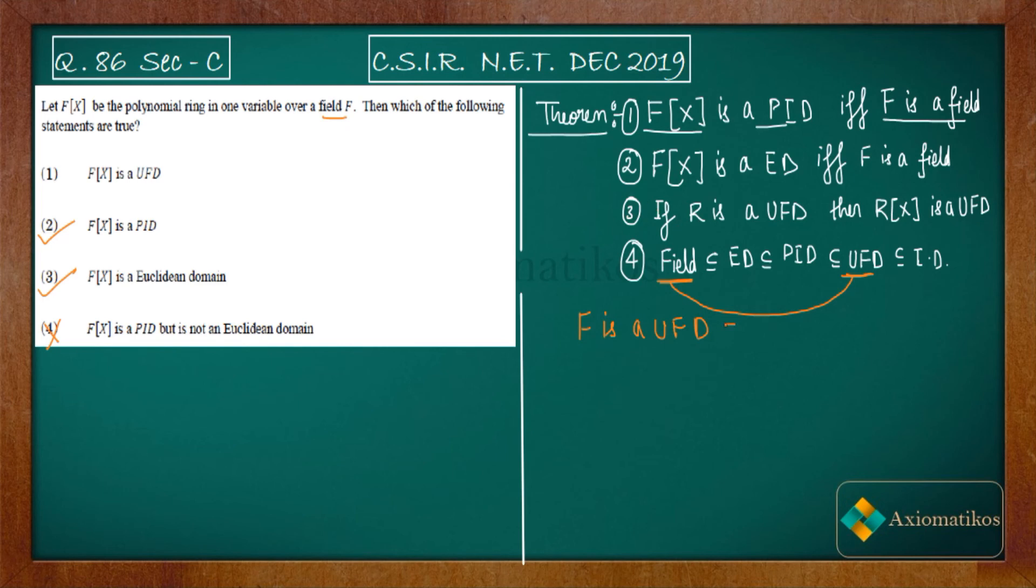we can say that f(x) is a UFD. So this problem is a very basic problem dependent upon these four basic theorems - or you can say results or facts - from abstract algebra. That is why options one, two, and three are correct for this problem, and the fourth one